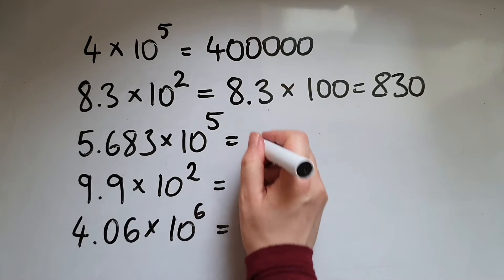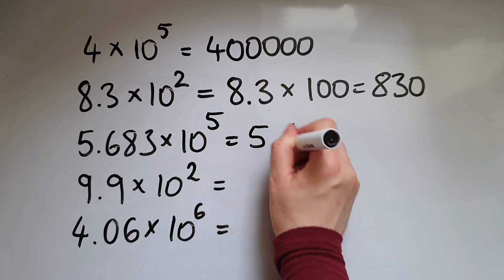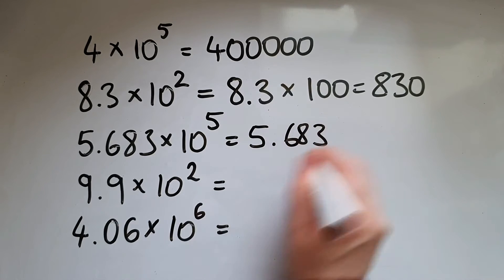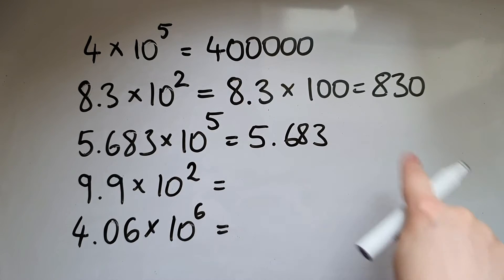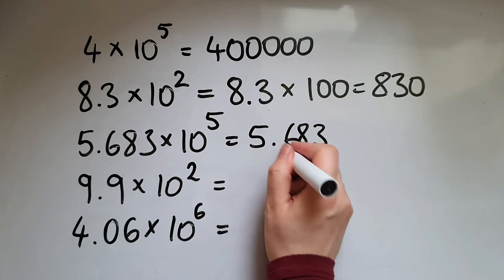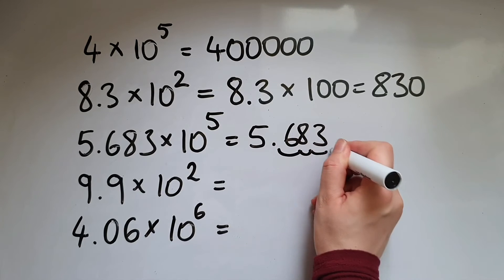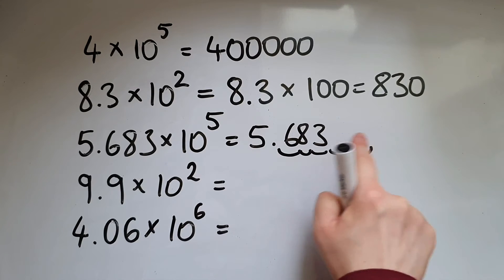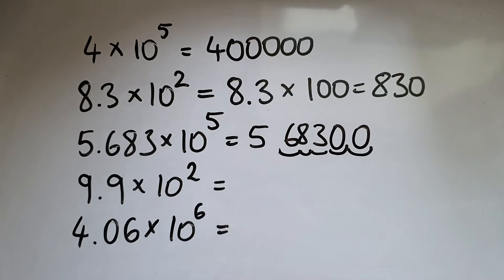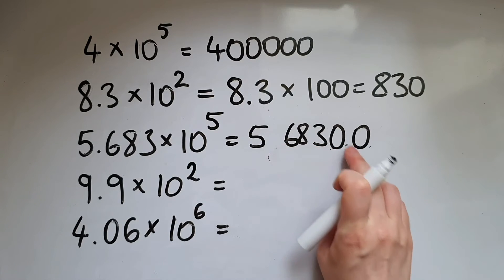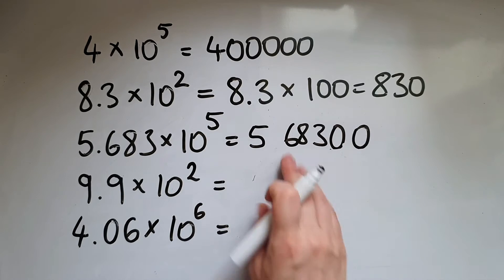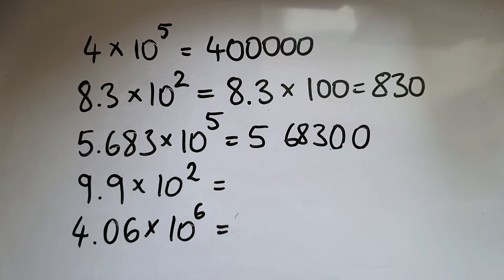Looking at 5.683 times 10 to the power of 5, that means moving the decimal point 5 places to the right: 1, 2, 3, 4, 5. The remaining spaces fill with zeros and we remove the decimal point. The answer is 568,300.